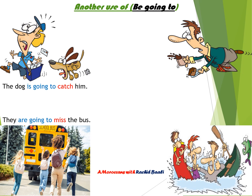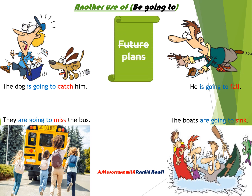Moving to the picture with the man and the boats — the boats are going to sink. And the last one: he is going to fall. So in these examples, we are no longer talking about future plans. Here we are talking about predictions.